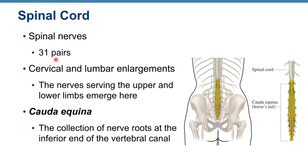We have 31 pairs of spinal nerves, one pair per segment. There is also a cervical and lumbar enlargement, and nerves from these enlargements serve the upper and lower limbs. The cauda equina is the collection of nerve roots at the inferior end of the vertebral canal. The spinal cord ends at the conus medullaris, but the remaining spinal nerves travel downward and exit through the intervertebral foramina, forming a horse-tail-like structure called the cauda equina.